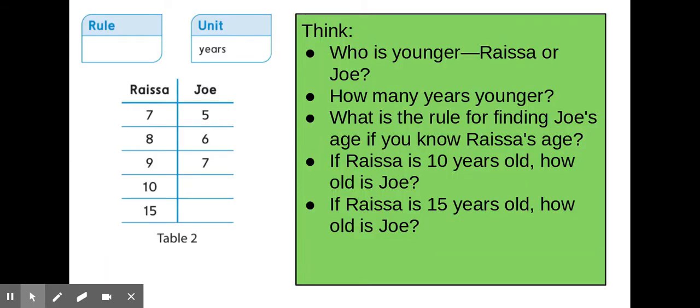Let's look at another table. This is a similar type of problem with Raisa and Joe, and the unit again is years, so this is talking about ages. By looking at this table, I want you to think: who is younger, Raisa or Joe? Well, I can tell Joe is five and Raisa is seven, so Joe is younger because his number is smaller. How many years younger is Joe? Seven minus five is two, eight minus six is two, and if Raisa is nine and Joe is seven, that's also two years difference. So Joe is two years younger than Raisa.